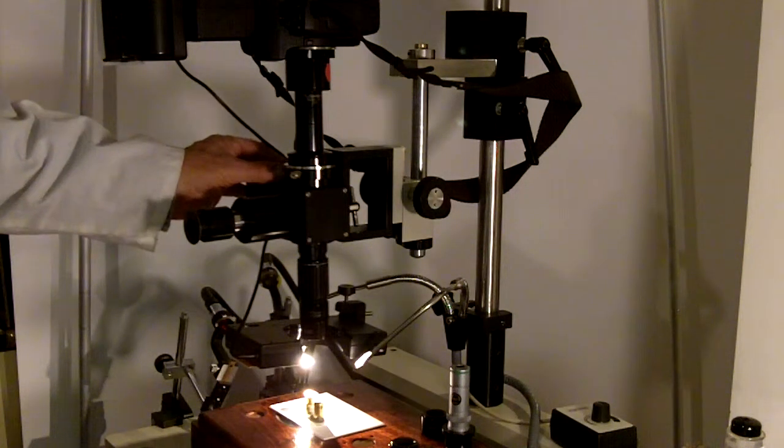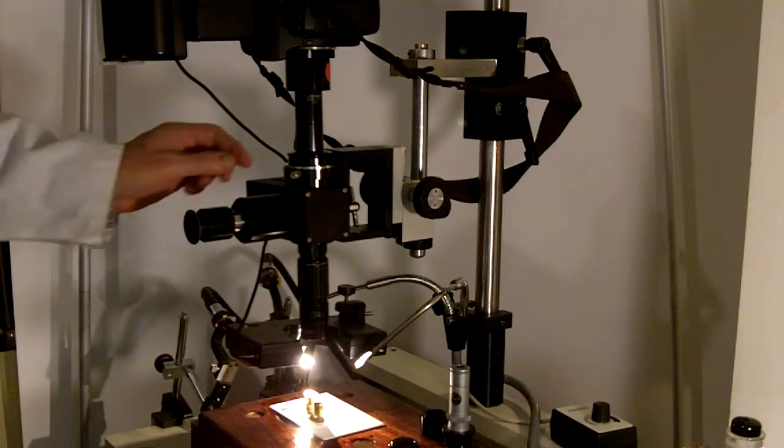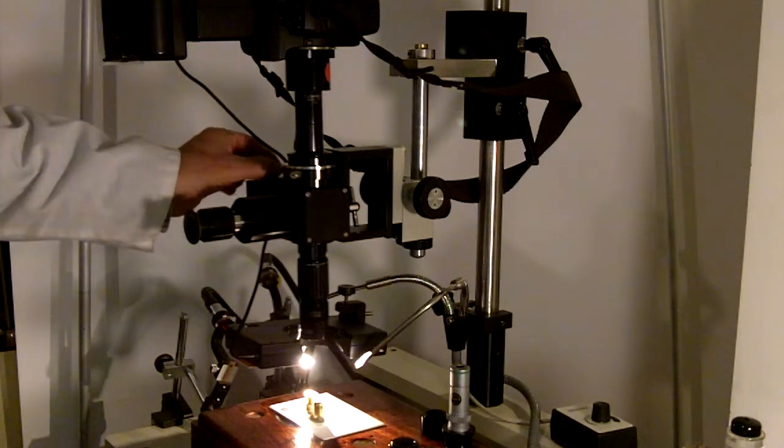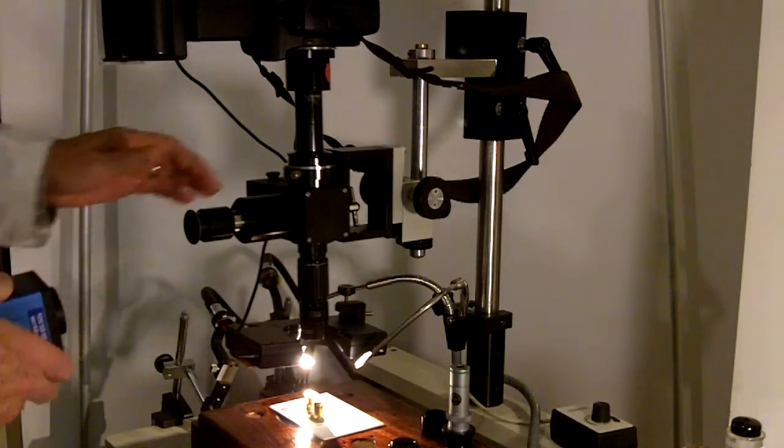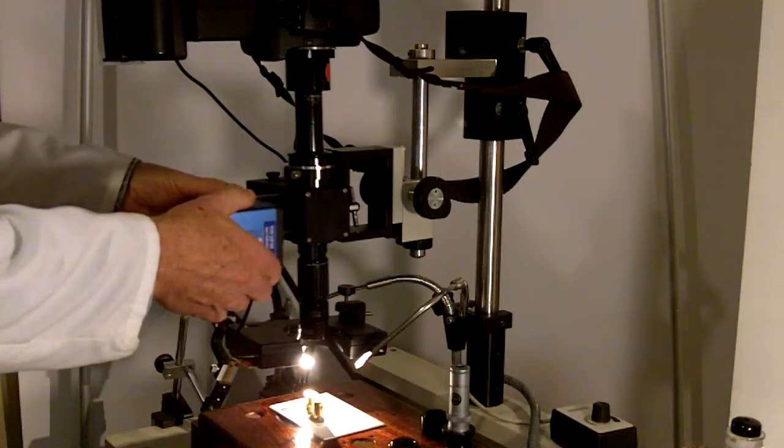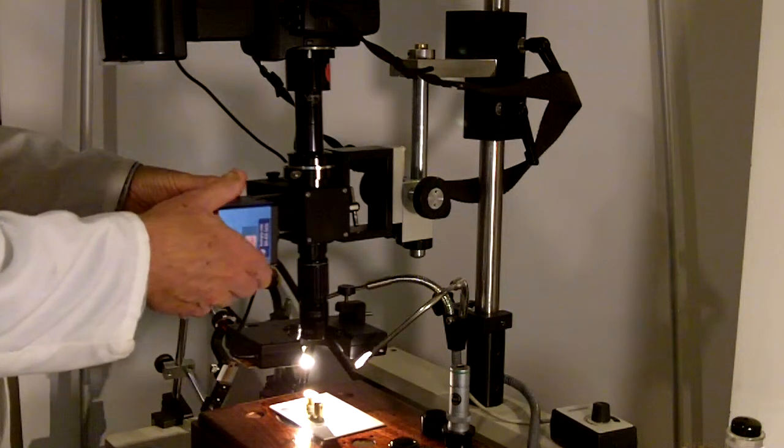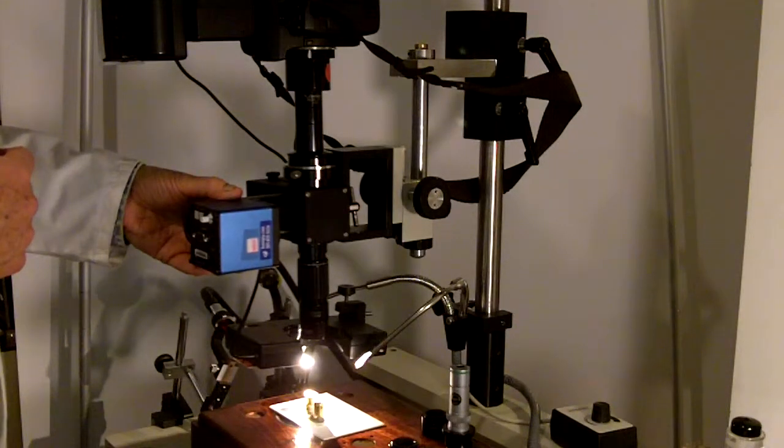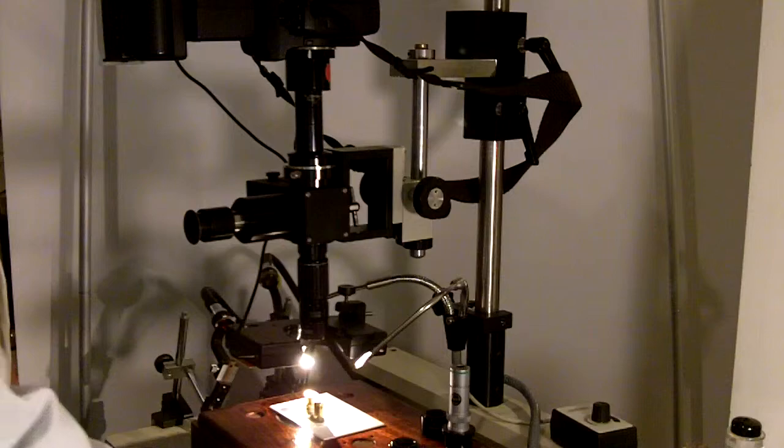You can quickly go from the horizontal eyepiece to the vertical port just by flipping a lever here. We could also have the option to replace the eyepiece with a C-mount camera so that you can do a live presentation to students or training associates simultaneously with still photography using a DSLR camera.